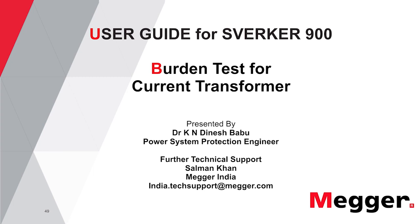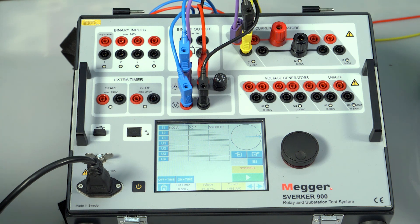Burden test for current transformer. The Sverker 900 test equipment has a very high burden to test electromechanical, static, numerical relay and also for testing current transformer.